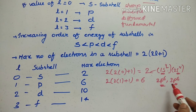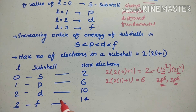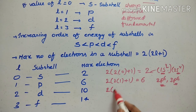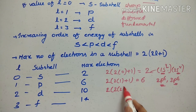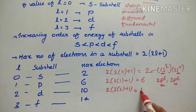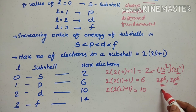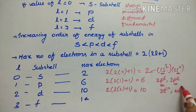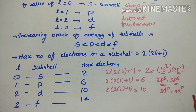If l equals 2, that subshell is named d. The maximum number of electrons is 2 into (2 times 2 plus 1) equals 10 electrons. So we have 3d10, 4d10 — these represent complete electron configurations in the d subshell.